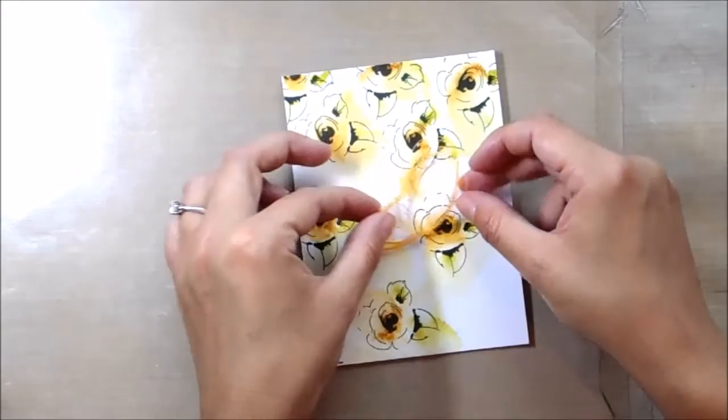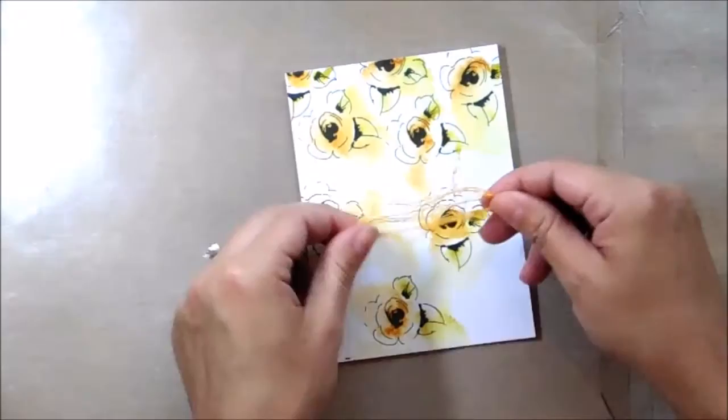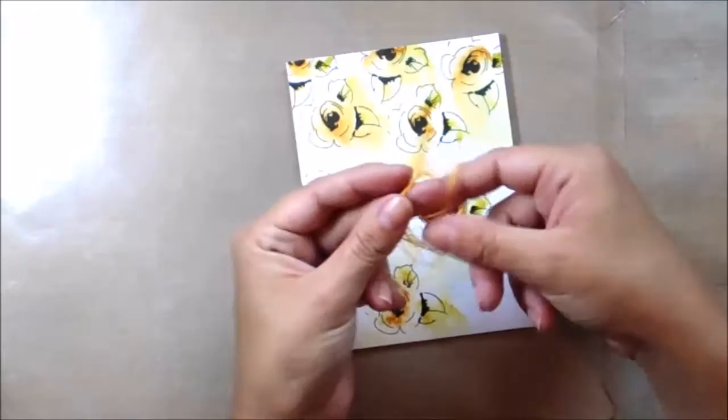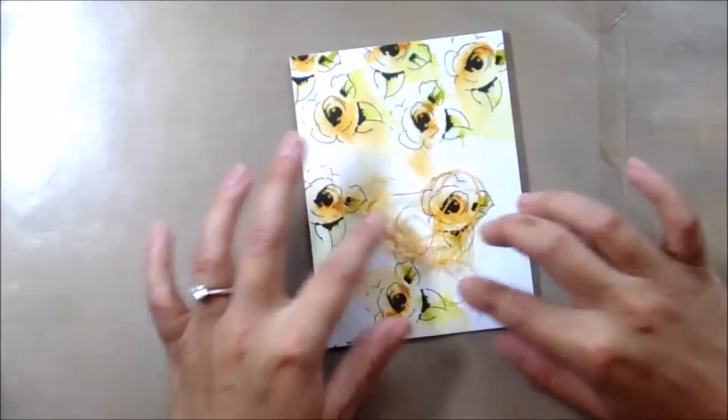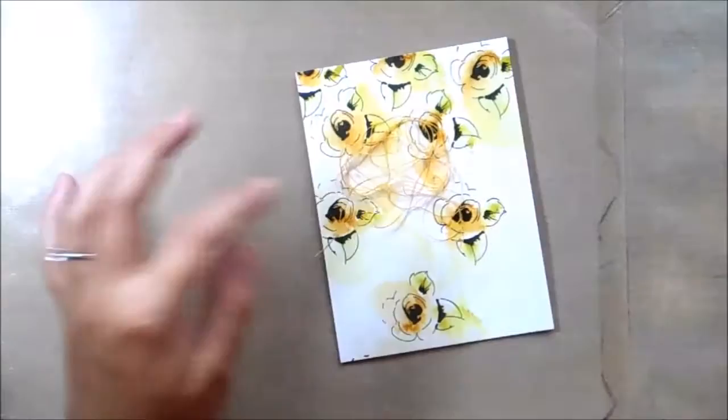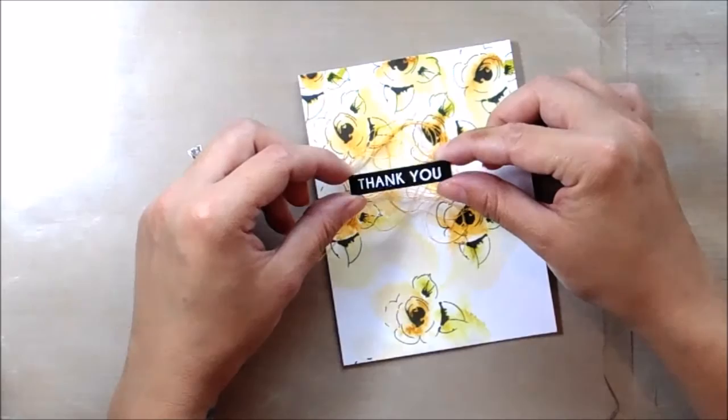Once I've done that, I have some twine and some thread that kind of matches the yellow of the flowers. I've wrapped it around my hand a couple of times and then I'm just going to rough it up a little before adding it to where I want it. I'm going to add my sentiment over in this corner here for a change, so I've messed it up.